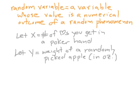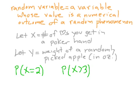We might say Y is the weight of a randomly picked apple — how heavy it is in ounces — that's a random variable. We're going to look at things like the probability that X equals 2, meaning the probability you get exactly 2 hearts. We might write the probability that X is greater than 3 — that's the probability you get more than 3 hearts, which is probably not very likely. Or the probability that Y is less than 8.6 — that's the probability that a random apple is less than 8.6 ounces. That's the kind of notation we're going to be looking at throughout Section 7.1.